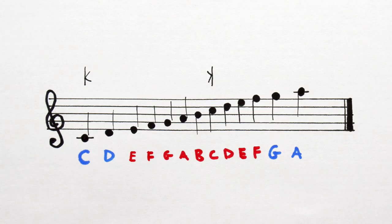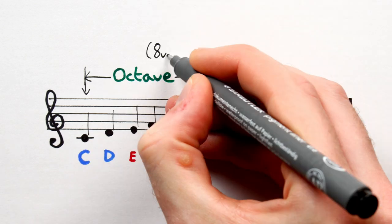This distance, or in musical terms interval, is called an octave. 8, V, E for short.